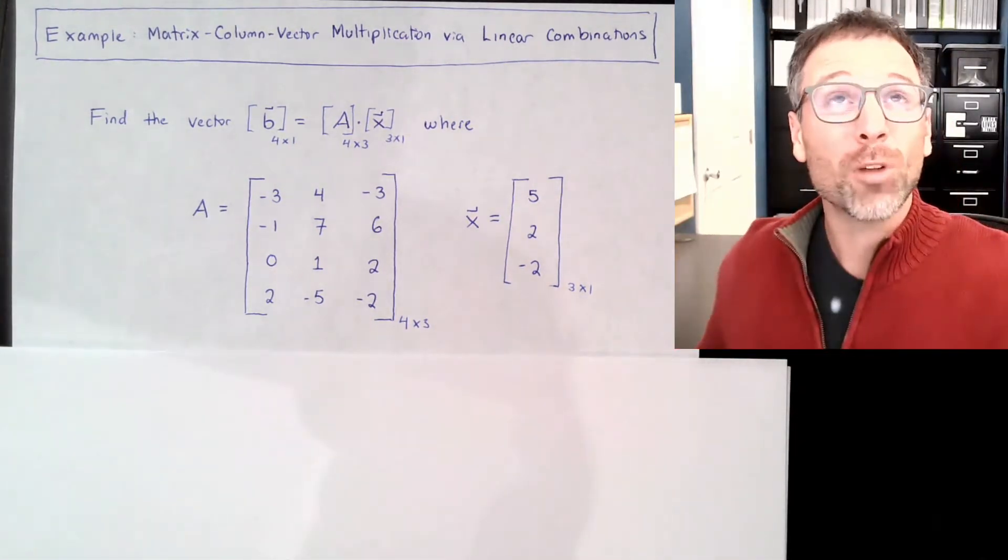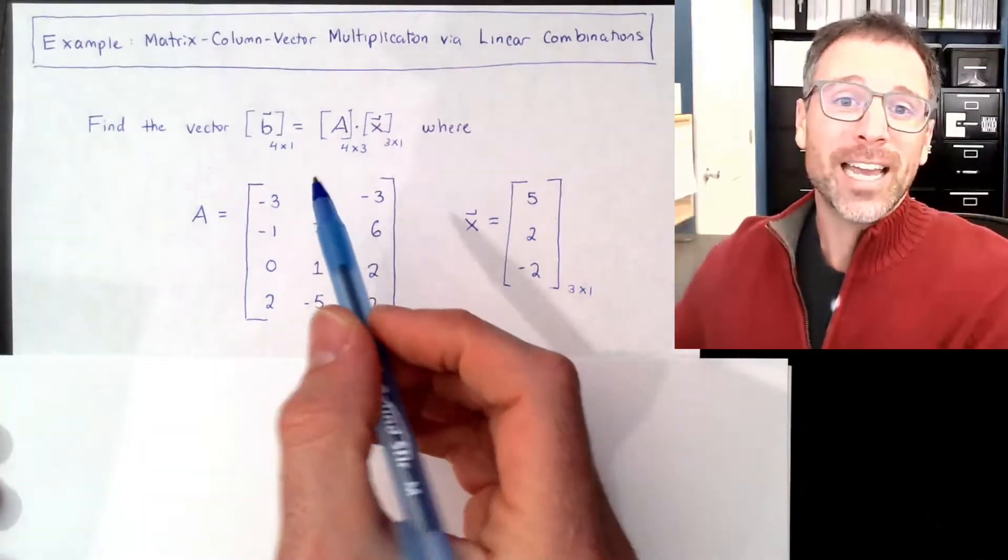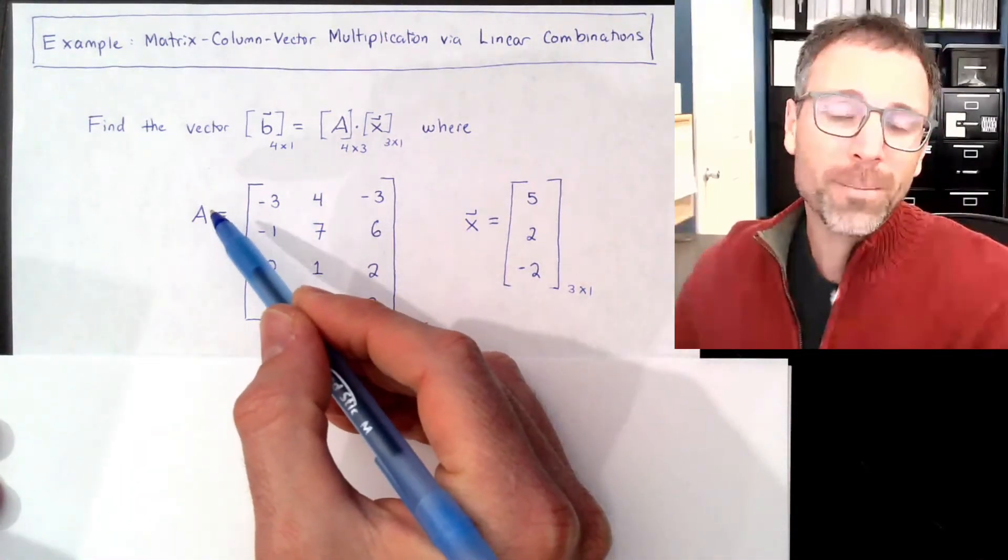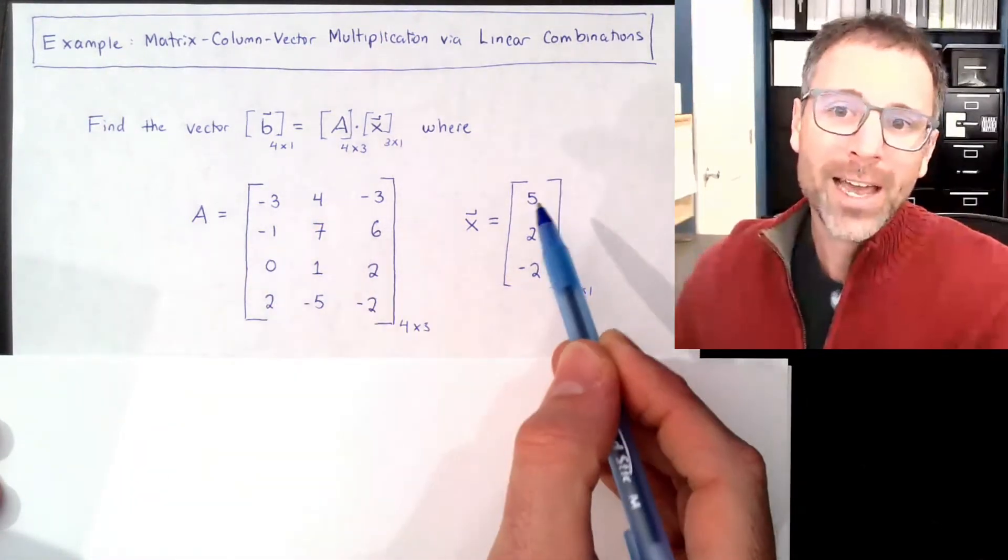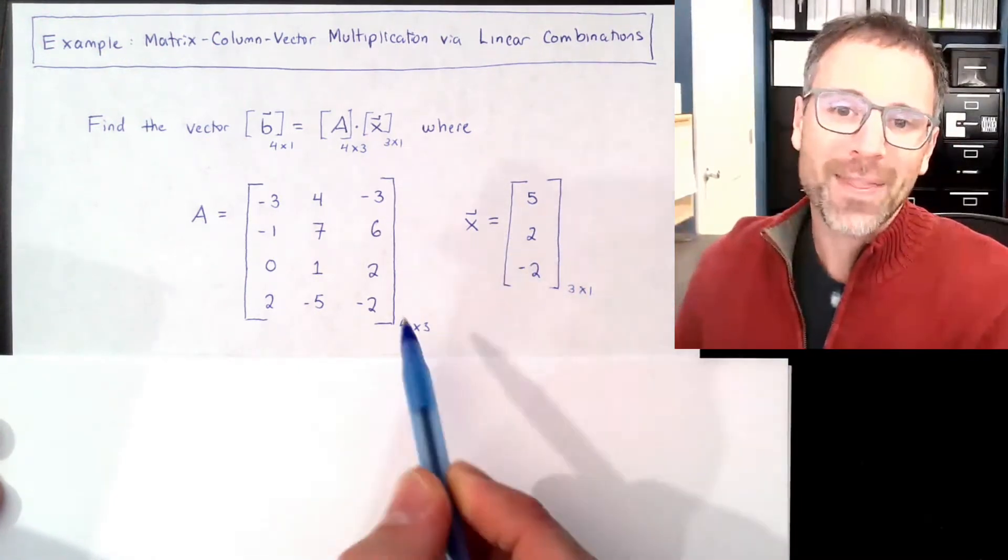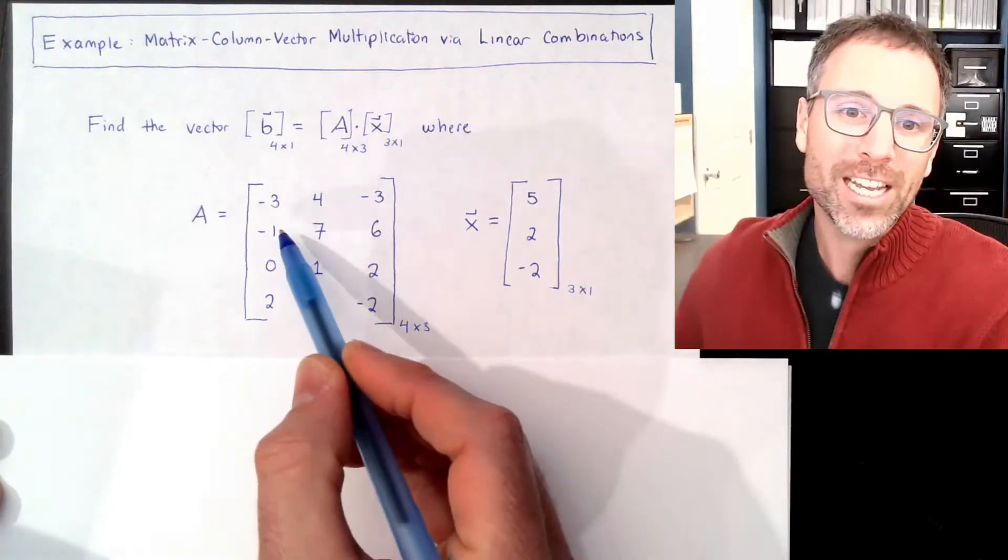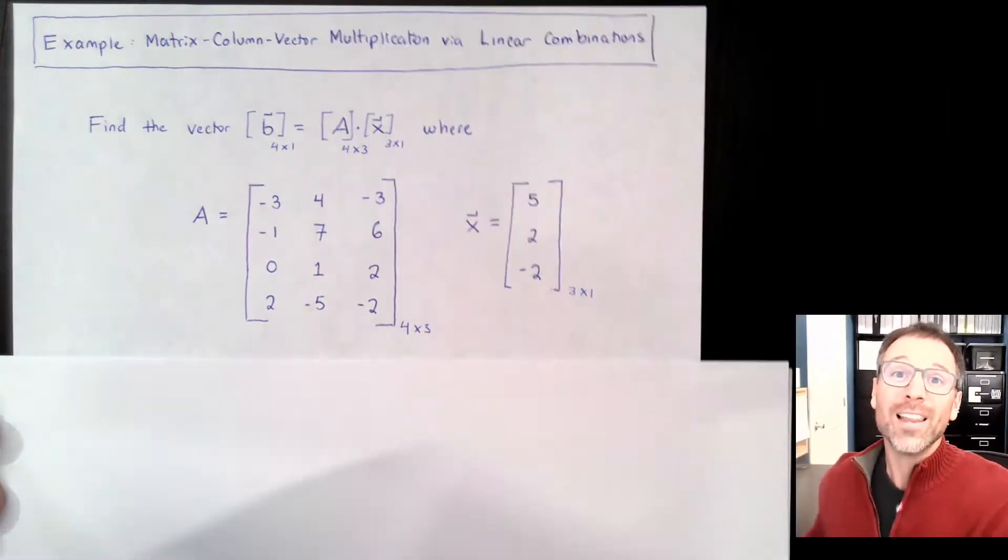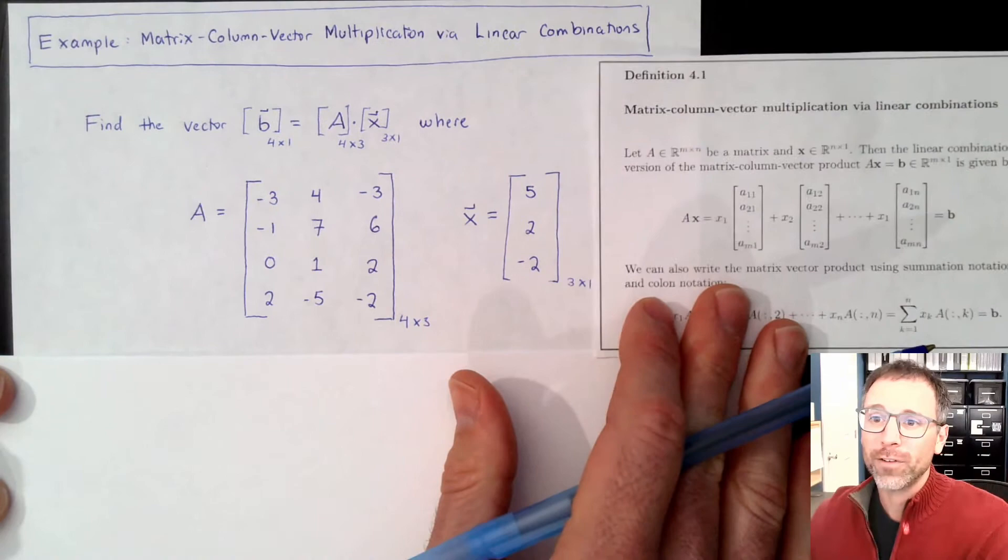What's the matrix multiplication definition? Take linear combinations of the columns of A scaled by individual entries of the vector x. And that's why the inner dimensions must agree. Each column gets one row.